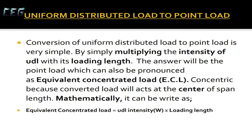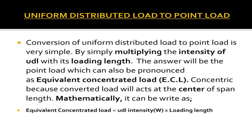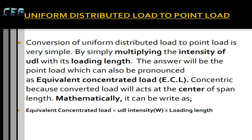Conversion of uniformly distributed load to point load is very simple — by simply multiplying the intensity of UDL with its loading length, the answer will be the point load, which can also be pronounced as equivalent concentrated load (ECL). The converted load will act at the center of the span length. Mathematically: Equivalent Concentrated Load = W × loading length.